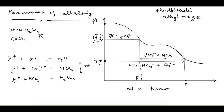As we add hydrogen ions and the pH reaches 8.3, it has been observed that all the hydroxide ions and half of the carbonate ions are neutralized. Only half the carbonate ion is neutralized because first the carbonate ion converts into bicarbonate ion, and then further acid is required. So we assume that half of the carbonate ion is neutralized at pH 8.3.